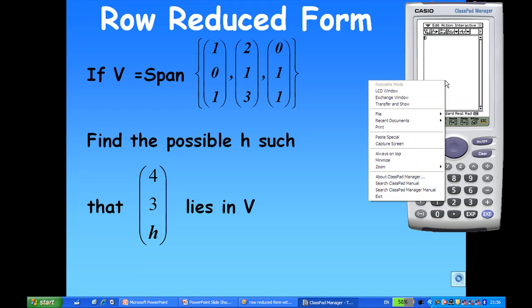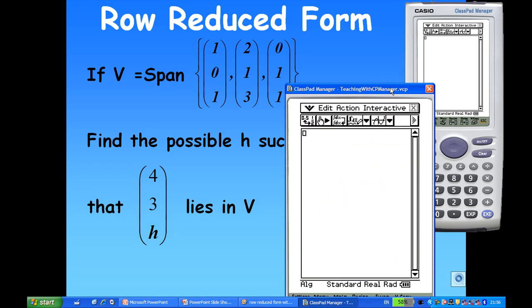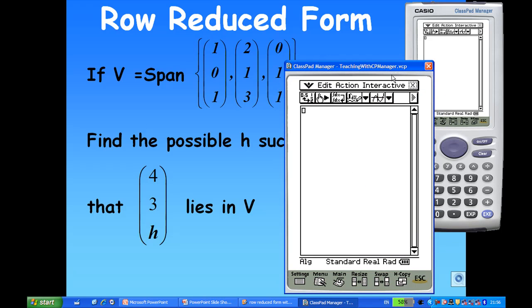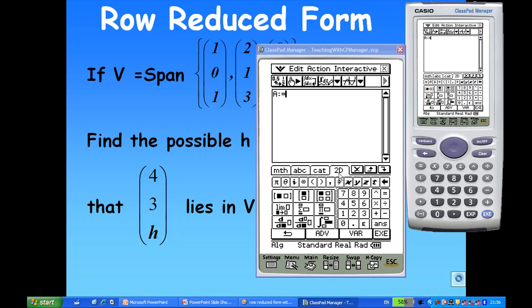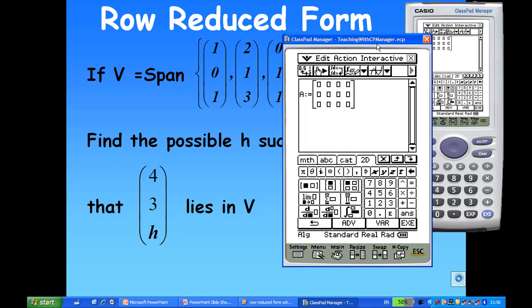So, I have a Classpad. Let's blow up the LCD window. I need to assign a matrix A. Let's say A is equal to, and then I'm going to enter the matrix now by using the keyboard, 2D matrix. One more time, 3 row 3 column, add another column, so 3 row 4 column.